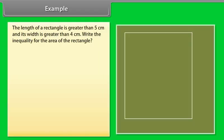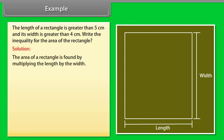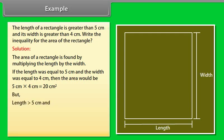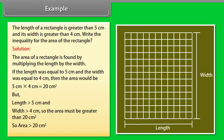Example: The length of a rectangle is greater than 5 cm and its width is greater than 4 cm. Write the inequality for the area of the rectangle. Solution: The area of a rectangle is found by multiplying the length by the width. If the length was equal to 5 cm and the width was equal to 4 cm, then the area would be 5 × 4 = 20 cm². But since the length is greater than 5 cm and the width is greater than 4 cm, the area is greater than 20 cm².